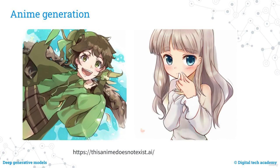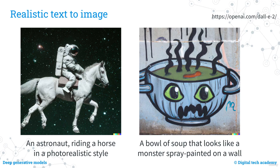In the previous slides, we saw images of people and computer-generated anime, but with no possibility to insert specific characteristics or generate exactly the image we want — just random faces or anime characters. If we want to generate images based on a description, that is also possible. Here, we can see two examples generated by the OpenAI DALL-E 2 model: on the left, an image from the text 'an astronaut riding a horse in a photorealistic style,' and on the right, 'a bowl of soup that looks like a monster spray-painted on a wall.' These results are absolutely incredible.